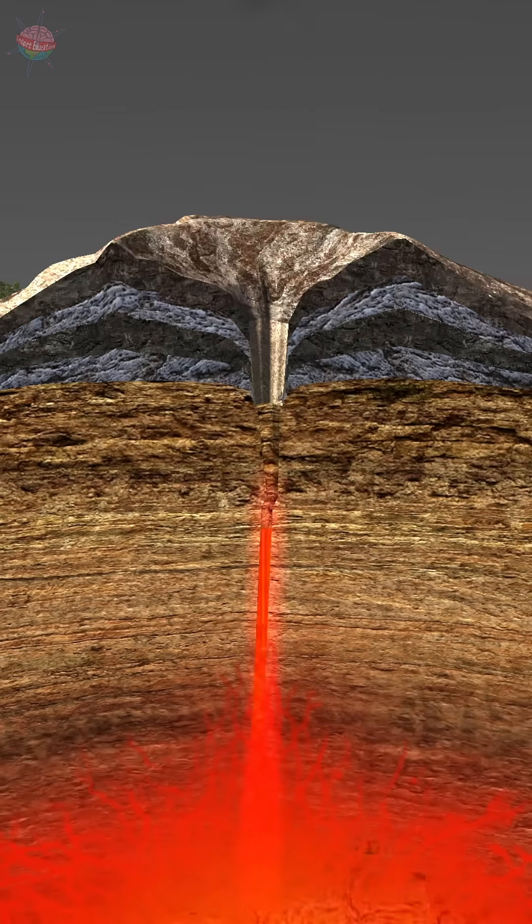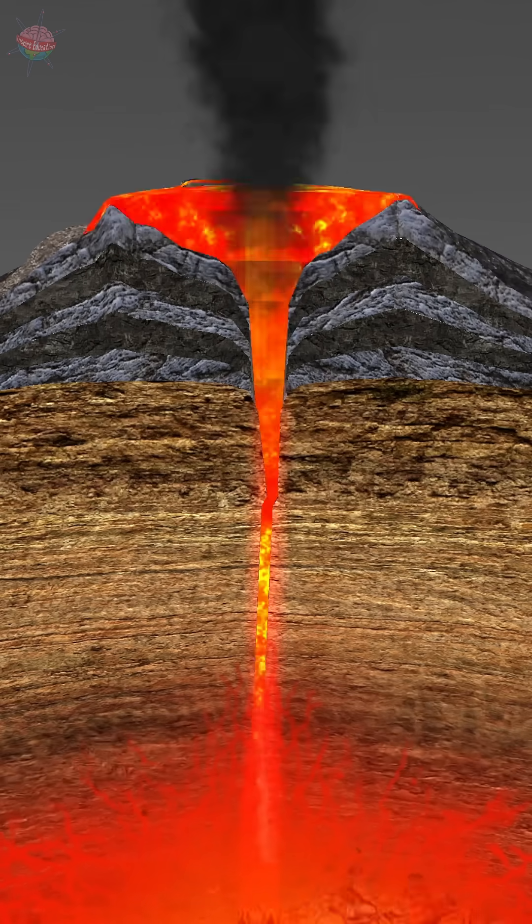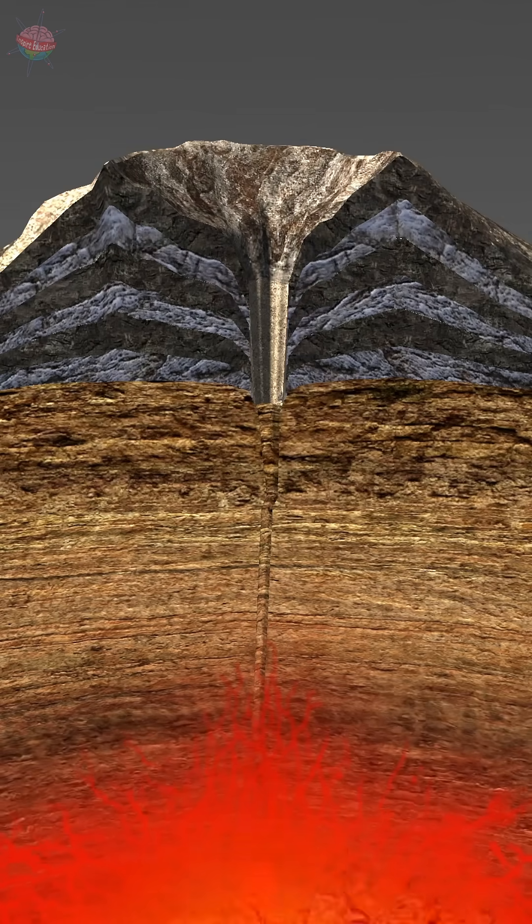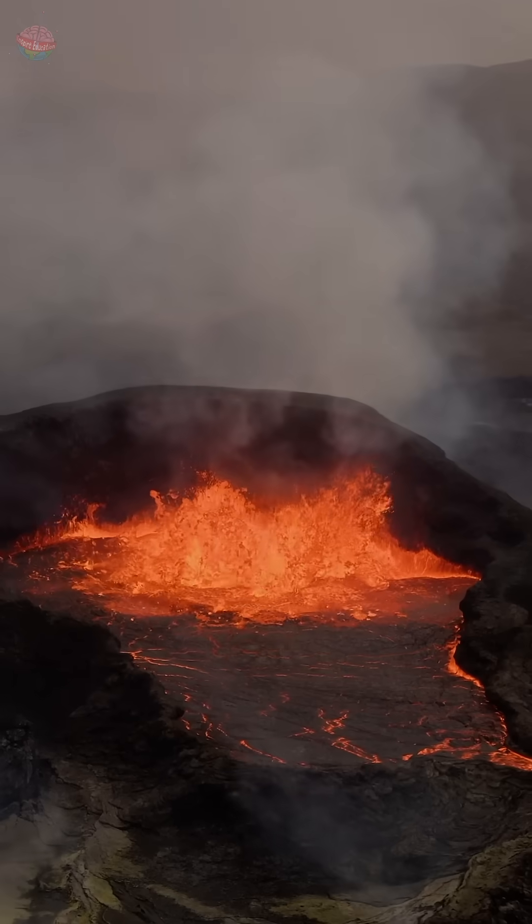Over time, there are more volcanic eruptions and each time the lava cools, it builds up the Earth's crust to eventually form a mountain called a volcano.